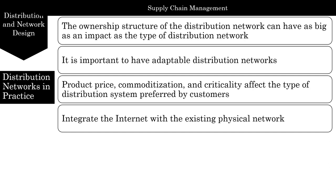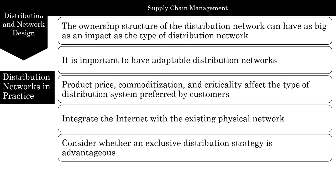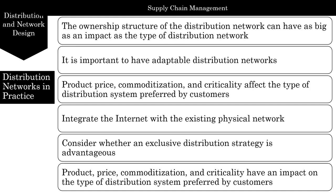To extract maximum benefit from the online channel for physical goods, firms should integrate it with their physical supply chain network. Separating the two networks often results in inefficiencies. This coupling of online with existing physical network is often referred to as click-and-mortar. Walmart is an example of how they adapted their bricks-and-mortar to a click-and-mortar approach. It is very important to consider whether an exclusive distribution strategy is advantageous, and product price, commoditization, and criticality have a huge impact on the distribution system preferred by the customer.